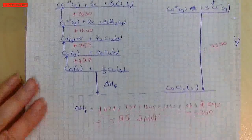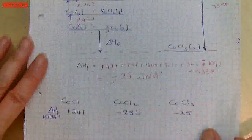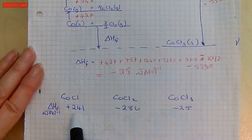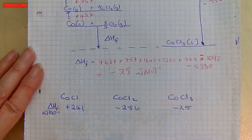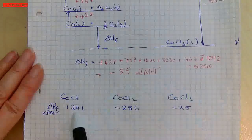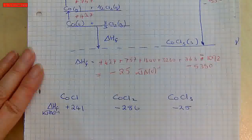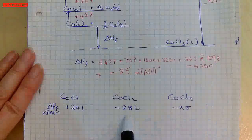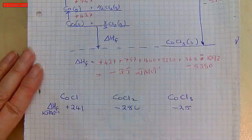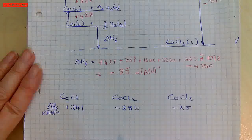Comparing them, cobalt 1 chloride is endothermic, while cobalt 2 and cobalt 3 chloride are both exothermic, so those two are more stable. The one most likely to form is cobalt 2 chloride because it is the most exothermic. That should answer parts B and C of the question.